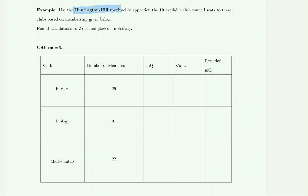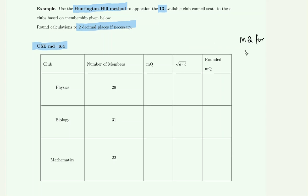In the example, we use the Huntington Hill method to apportion 13 available club seats based on membership. We're told to round to two decimal places if necessary and to use a modified divisor of 6.4. For physics, the population is 29 divided by 6.4, giving an MQ of 4.53.